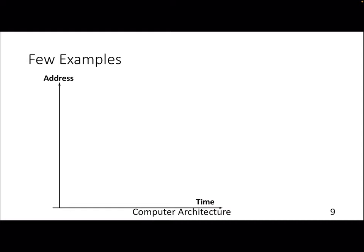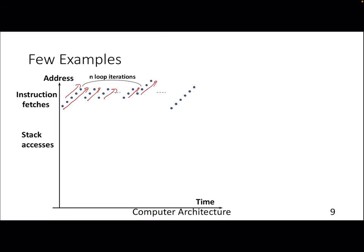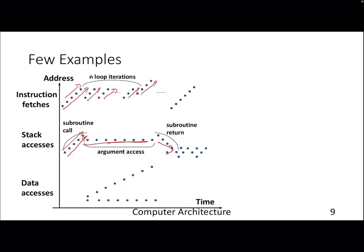The notion of caches comes into the picture because of this locality present in programs. Examples include instruction fetches for loops — entering a loop, performing operations, and exiting repeatedly — and stack accesses, where the stack pointer moves up or down as you enter and exit functions. In all these cases there is spatial locality: addresses are contiguous and close to each other. Similarly, accessing arrays — vector, 2D, or large scalar arrays — you will find temporal or spatial locality.